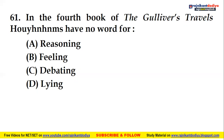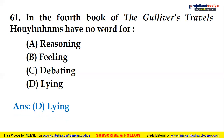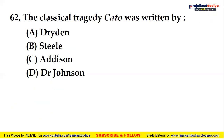The right answer is D — lying. In the fourth book of Gulliver's Travels, Houyhnhnms have no word for lying. Moving to the 62nd question: the classical tragedy Cato was written by which of the following writers?